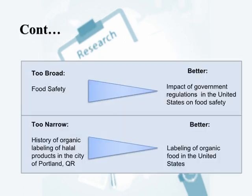For example, 'food safety' is too broad. A better research topic would focus on the impact of government regulations in the United States on food safety. On the other hand, 'history of organic labeling of halal products in the city of Portland' is too narrow. A better topic would focus on labeling of organic food in the United States.